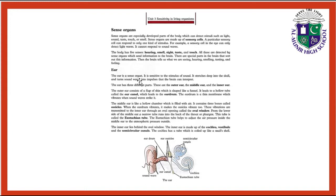First of all, the ear. The ear is a sense organ sensitive to the stimulus of sound. It stretches deep into the skull and turns sound waves into impulses that the brain can interpret. The ear has three different parts: outer ear, middle ear, and inner ear. The outer ear consists of a flap of skin shaped like a funnel.